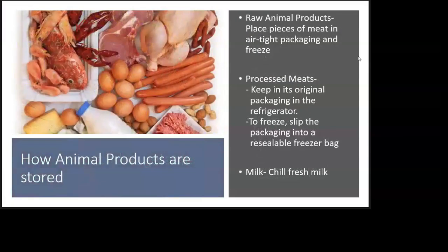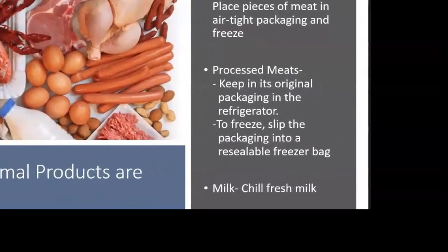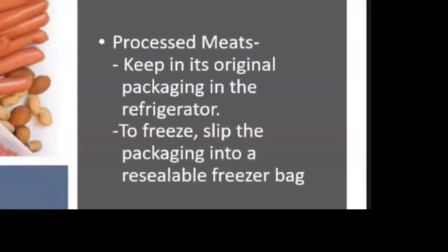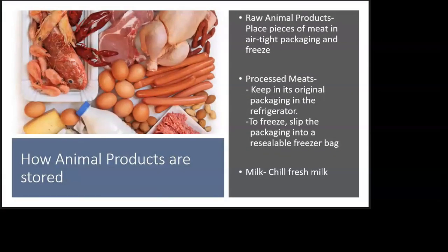For animal products, place pieces of meat in airtight packaging for freezing — to prevent freezer burn and the proliferation of bacteria, which is attracted to blood in raw meat. For processed meats like sausage, ham, and bacon, keep in original packaging in the refrigerator — there's a reason those packages are in place. It must be stored in a resealable freezer bag to prevent air from entering. For milk, cheese, and yogurt, you need to chill these products in a specific compartment in the fridge.